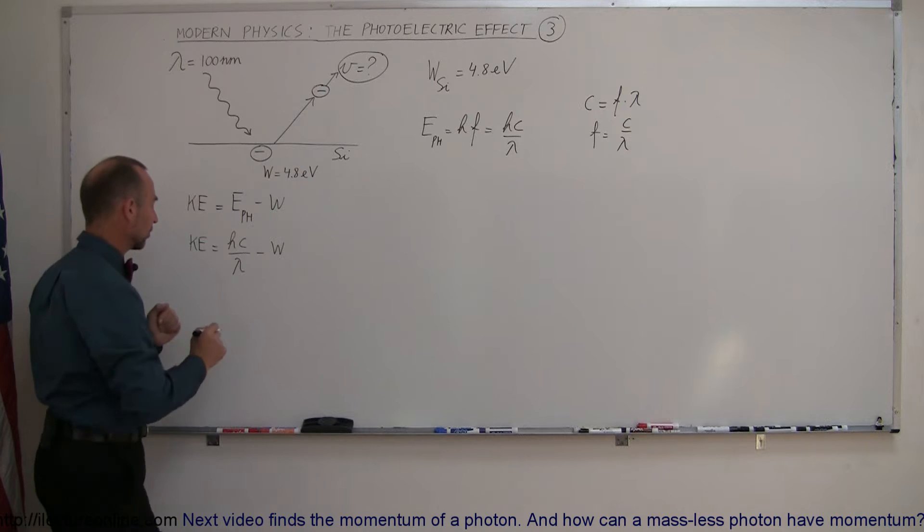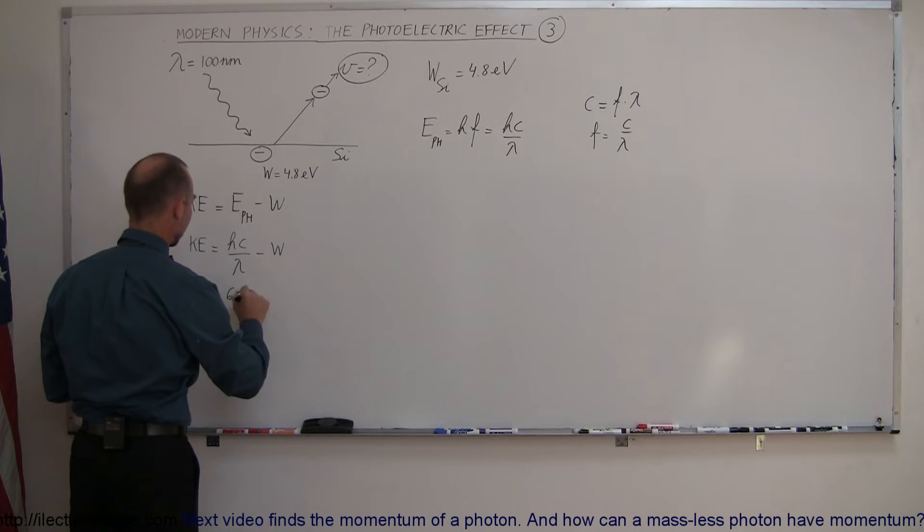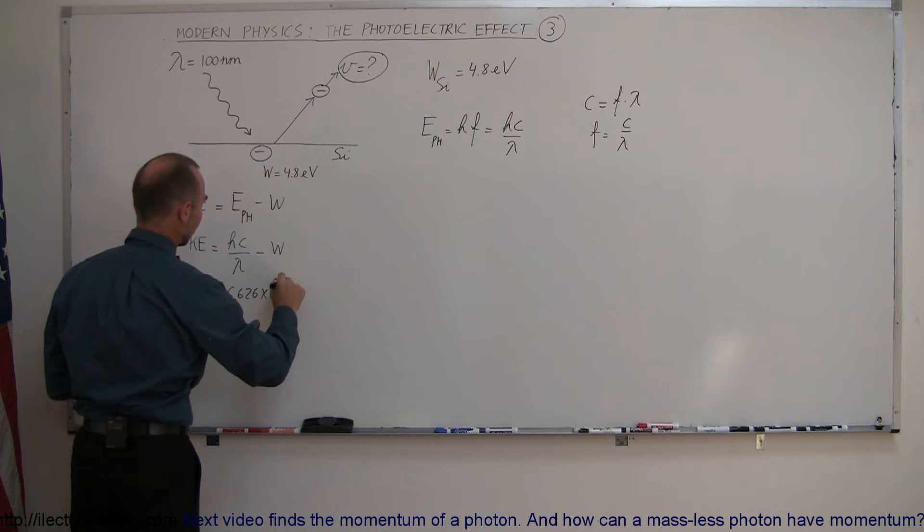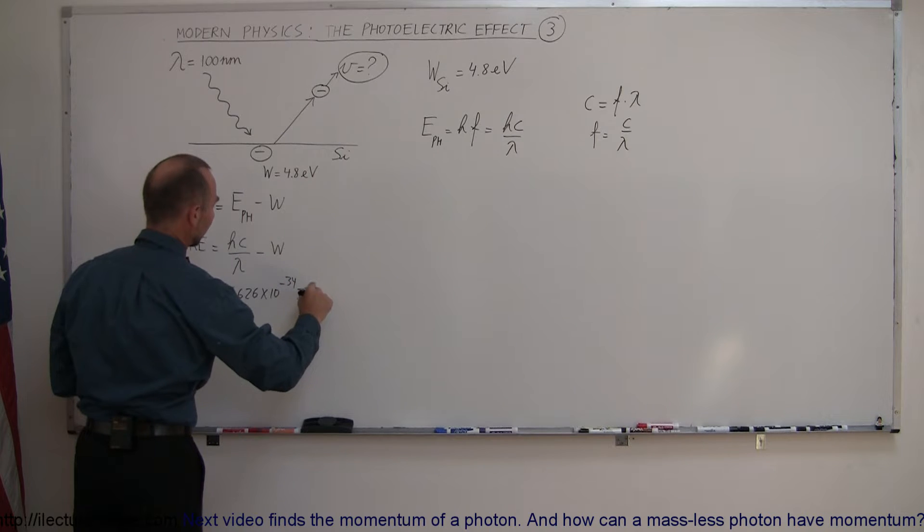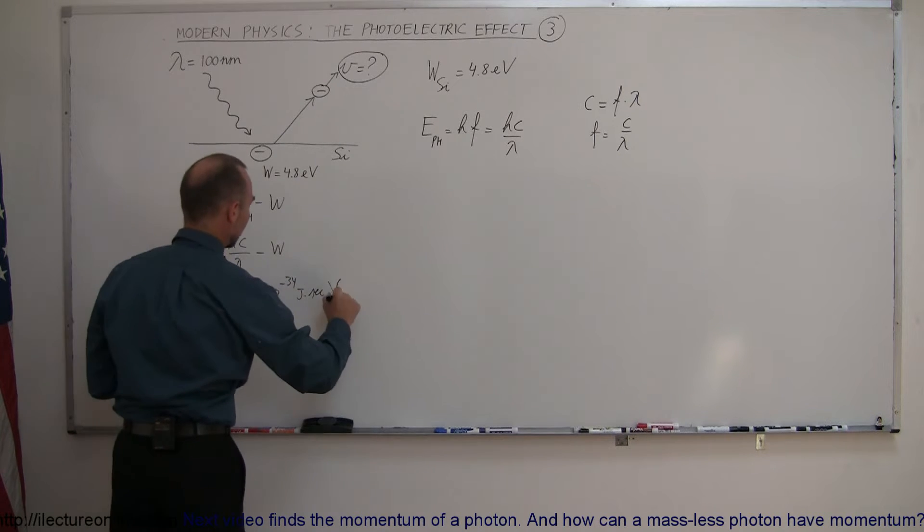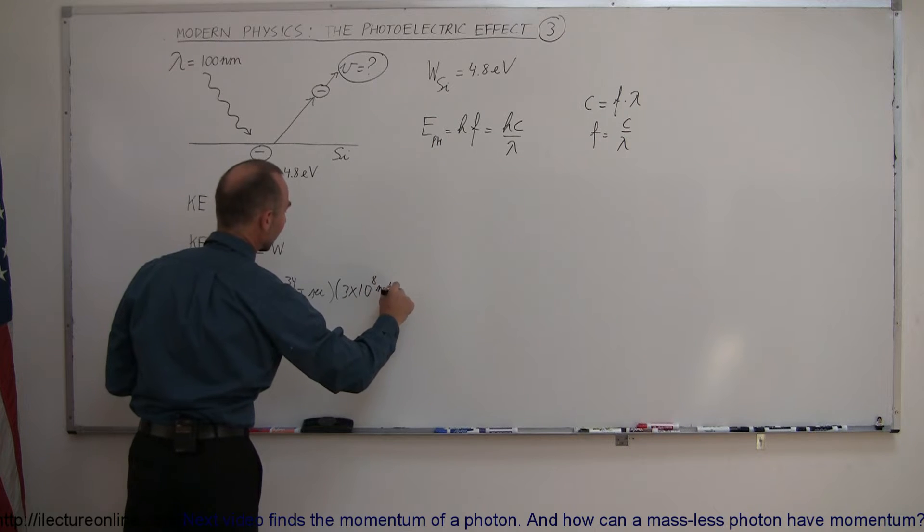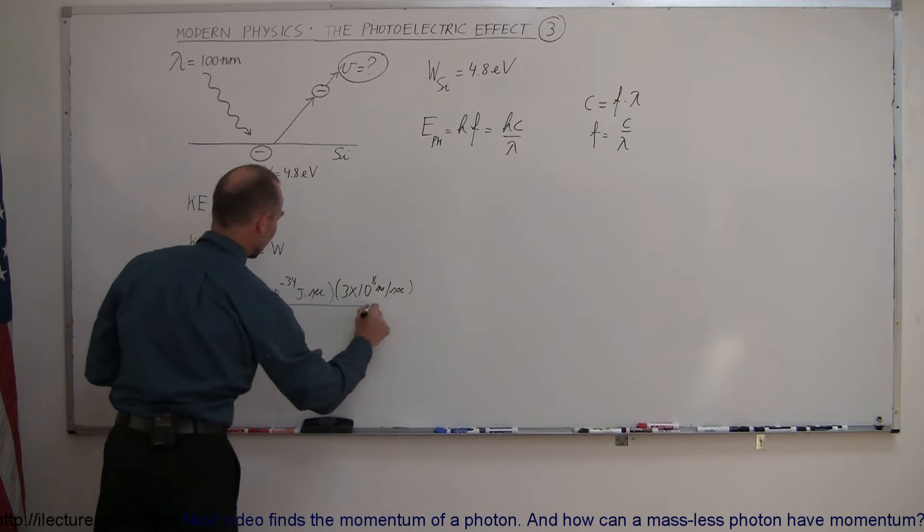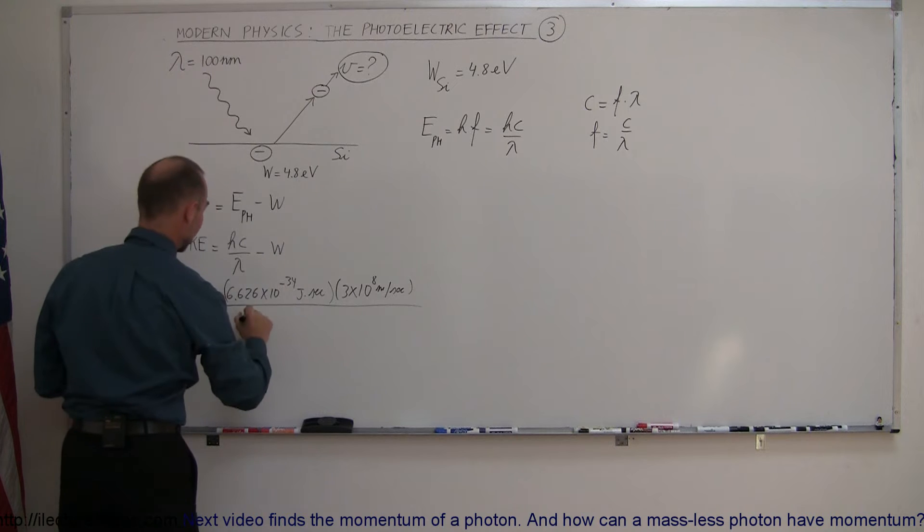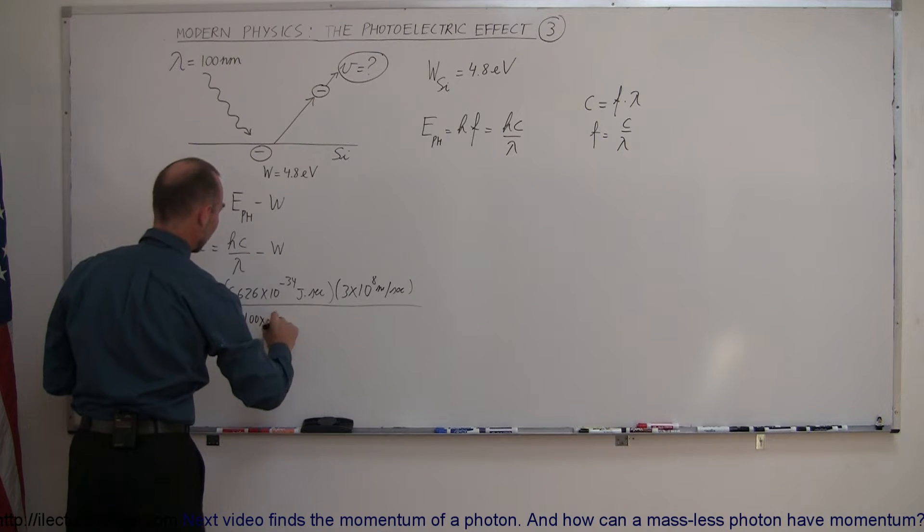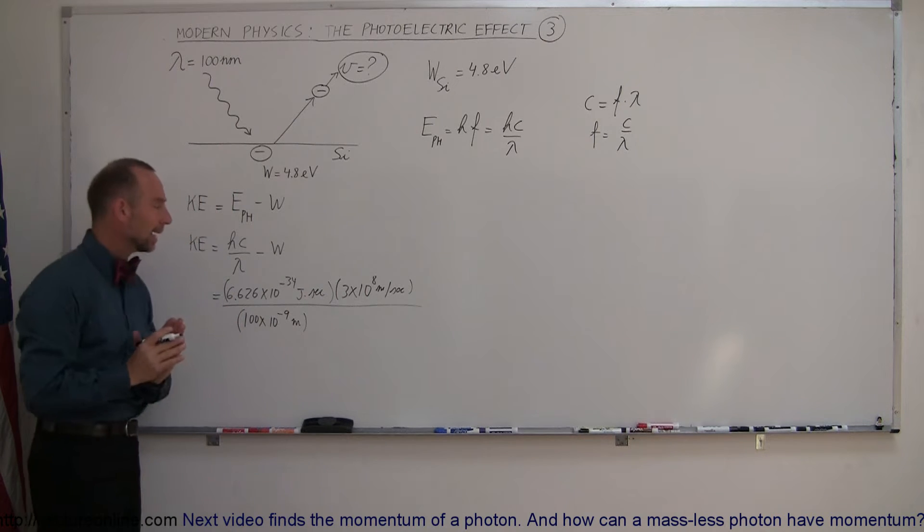So plugging in the numbers here, we get 6.626 times 10 to the minus 34 joules times seconds. Speed of light, 3 times 10 to the 8 meters per second. And then divide the whole thing by the wavelength. The wavelength is 100 nanometers or 100 times 10 to the minus 9 meters. And of course, this will give us the energy of the photon in terms of joules.